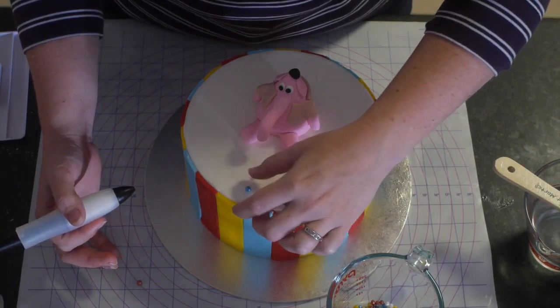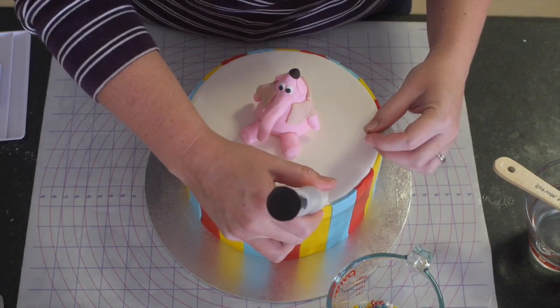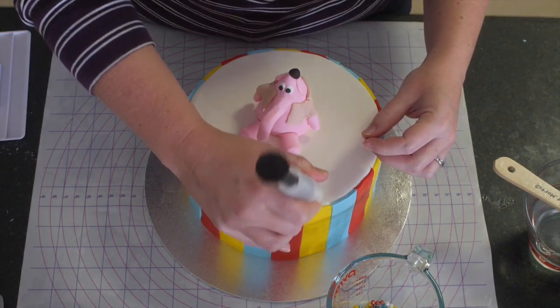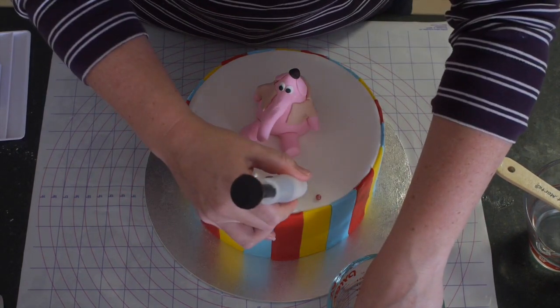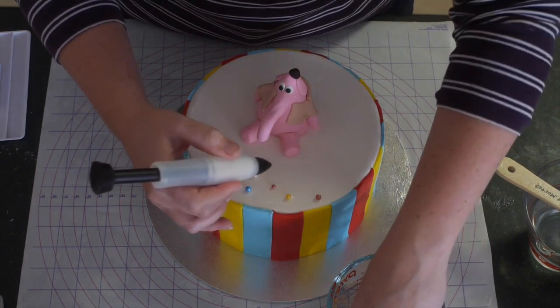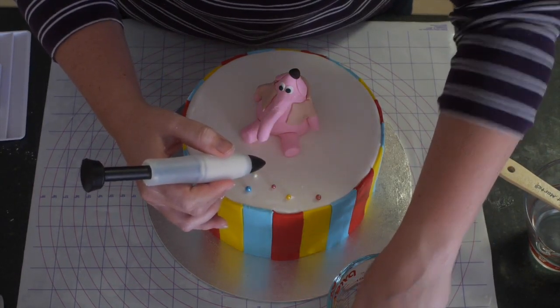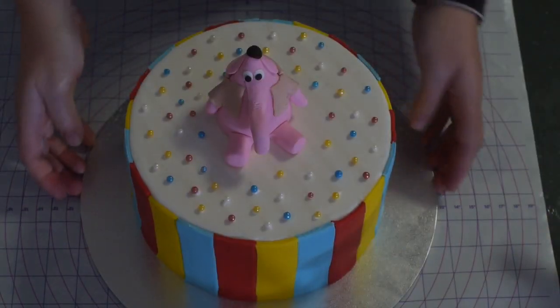But unfortunately I have a cold and my energy levels are quite low, so this is the Bing Bong cake that I have come up with. I do hope you have enjoyed watching this tutorial. I hope it gives you an idea. The good thing with these stripes is you can use them for anything. You can use them for like circus themes, change the colours up, and do them as a nice pastel colour around. It really is such a useful tip.